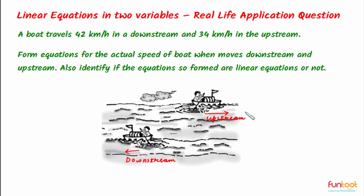Let's do this problem. A boat travels at a speed of 42 km per hour downstream and 34 km per hour upstream. We have to form equations for the actual speed of the boat when it moves downstream and upstream, and also identify if the equations so formed are linear equations or not.